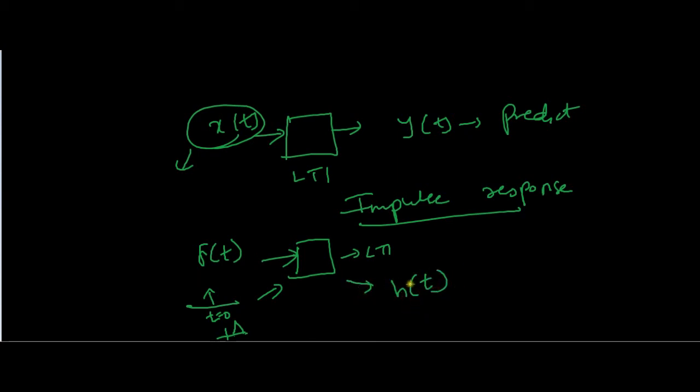Say, H of t. If we know H of t beforehand, we can predict the output of any signal. If we know H of t, we have the impulse response beforehand. We know the impulse response of this LTI system. Suppose, if we give input X of t to the system, then how can we predict the response?